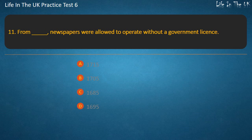Question 11. From when were newspapers allowed to operate without a government licence? Options: 1715, 1705, 1685, 1695. Answer: 1695.